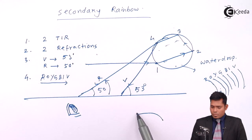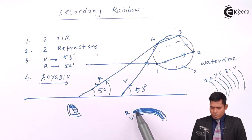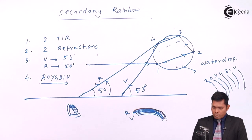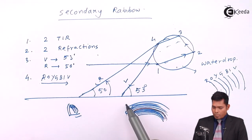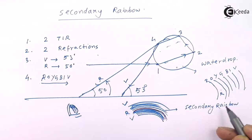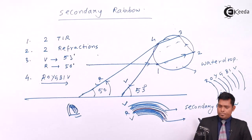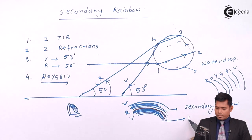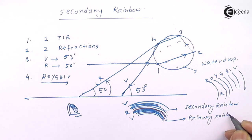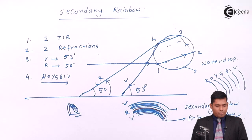So, the primary rainbow shows seven colors starting with violet and ending with red. Just after that, the secondary rainbow begins with red and ends with violet, and it is sometimes seen above the primary rainbow if you observe the sky carefully after rain. This is all about the rainbow — thank you very much.